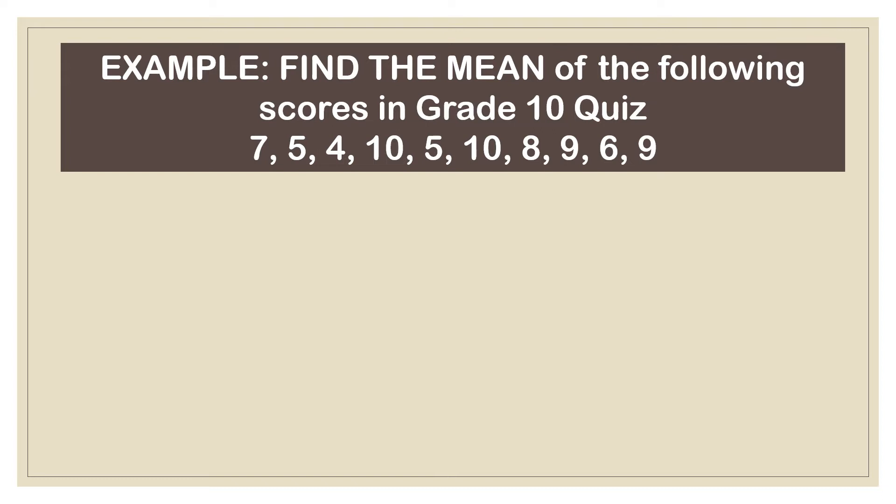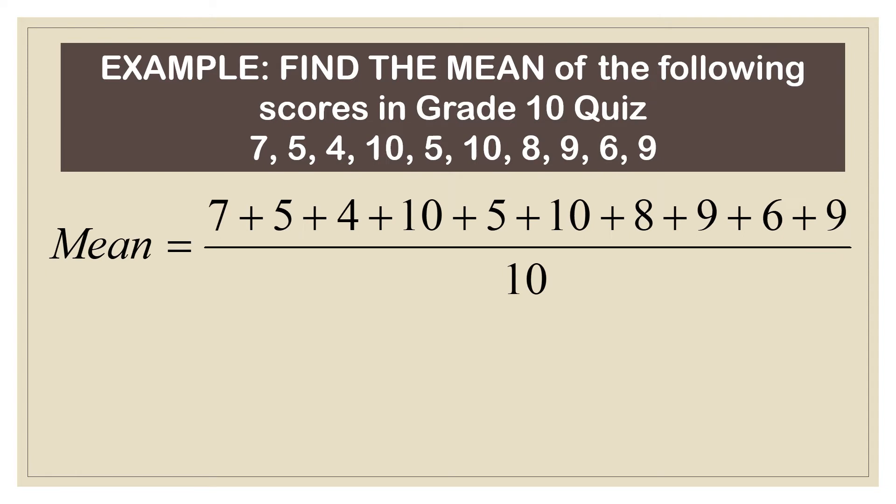Find the mean of the following scores in grade 10 quiz. The scores are 7, 5, 4, 10, 5, 10, 8, 9, 6, and 9. So to get the mean, you add all the numbers and then divide that by 10 because there are 10 scores in the problem. So the mean is equal to 73 divided by 10 or 7.3. So the average is 7.3.